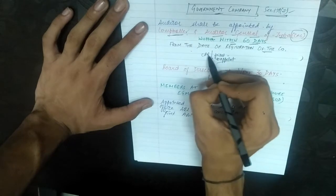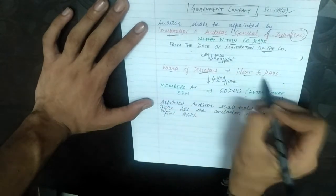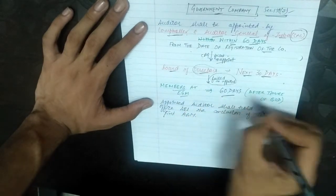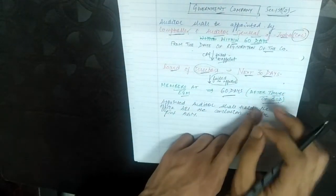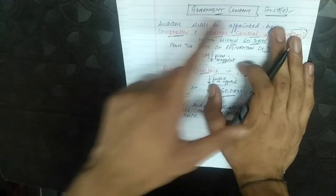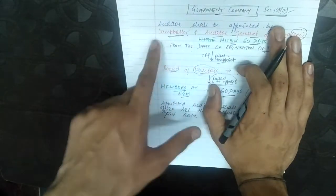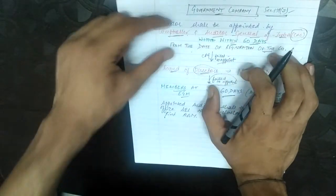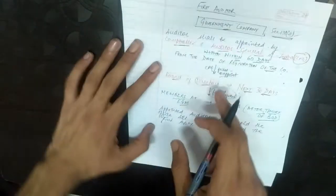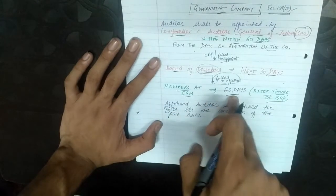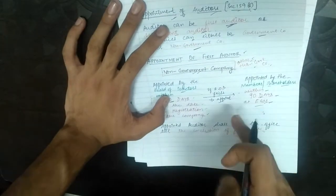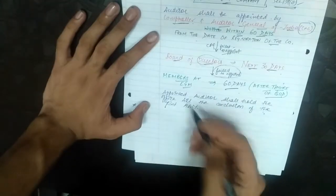If CAG fails to appoint, then the Board of Directors will appoint within the next 30 days. If the Board of Directors also fails, then members at EGM will appoint within 60 days after the tenure of the Board of Directors. In case of non-government companies it is 90 days, but here it is 60 days.